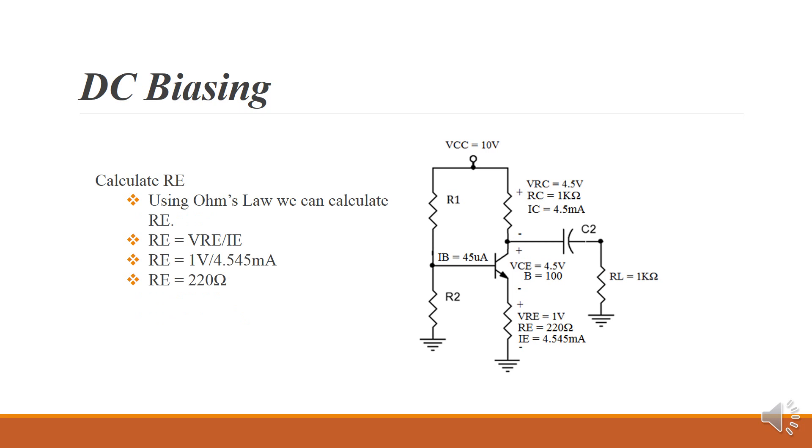Now that we have IE, we have VRE from before, using Ohm's law, voltage divided by current, we can calculate the resistance, the emitter-resistor resistance. So in our example, we have 1 volt divided by 4.545 milliamps. That gives us 220 ohms, which happens to be a standard value in this case.